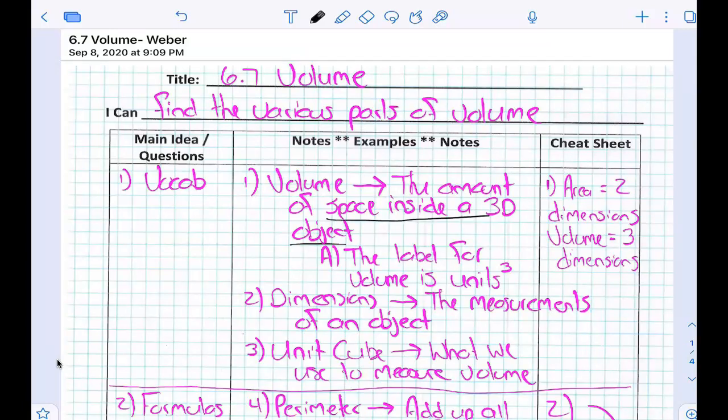And the label for volume is units to the power of three, right? Units cubed, because when we're dealing with volume, we're figuring out how many cubes can go inside of a shape. So that's why we have cube units, and that's why we also say 3D shapes have three dimensions. So it all kind of goes together.